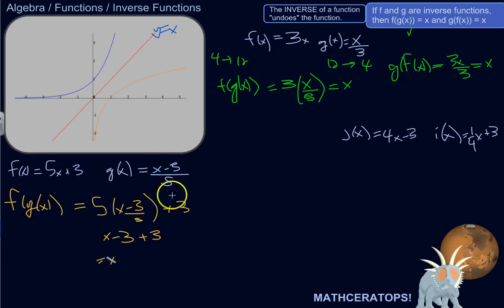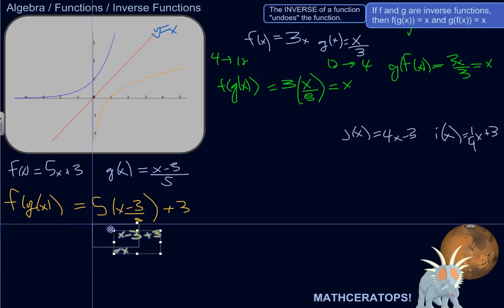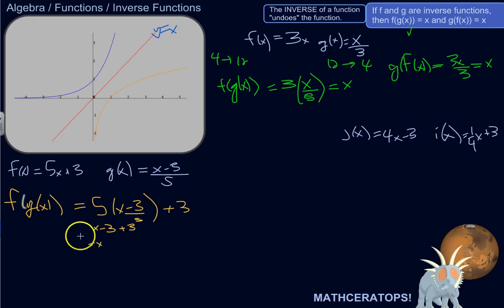But not good enough just to do it one way. Now we have to do g of f of x. g of f of x is equal to... g of x is x minus 3, but the x is going to be 5x plus 3, because that's f of x. 5x plus 3, and for x, minus 3 over 5.